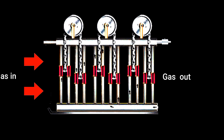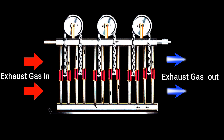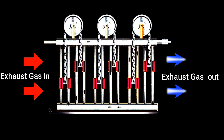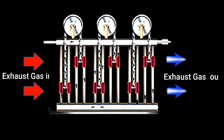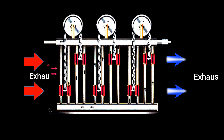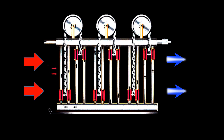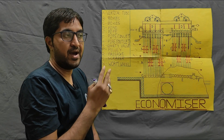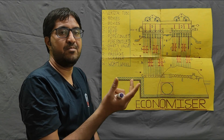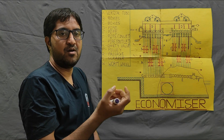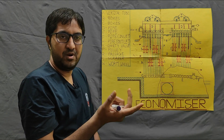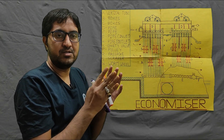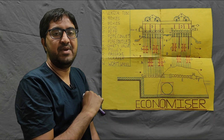So before the gases exit through the chimney, they pass through the bundle of tubes. Here you can see the inlet and outlet of the flue gases. Whatever energy is available in the flue gases is utilized to transfer heat to the water, increasing the water temperature. This hot water is then supplied to the boiler, so our coal consumption is reduced. Efficiency equals output upon input — output means turbine work and input means heat supplied in the boiler.